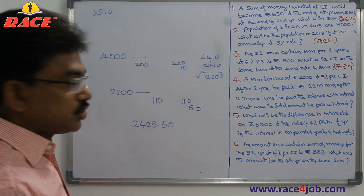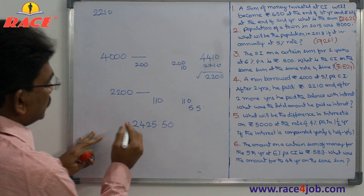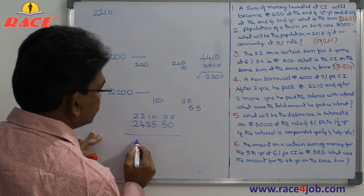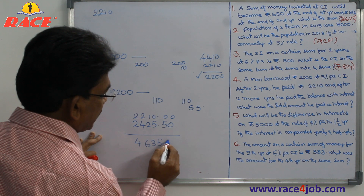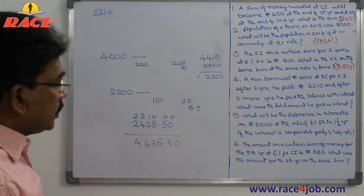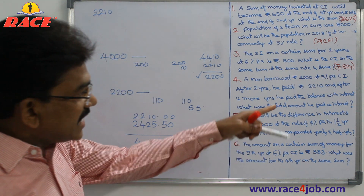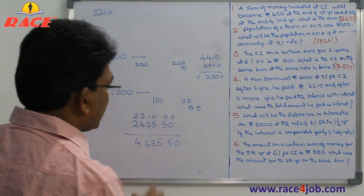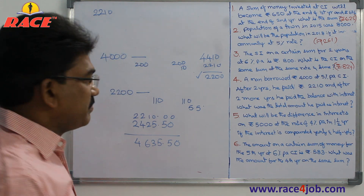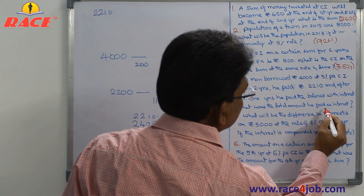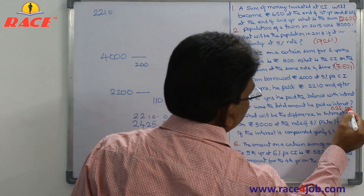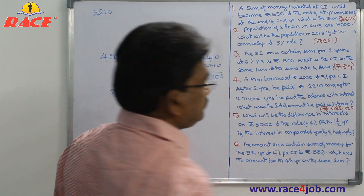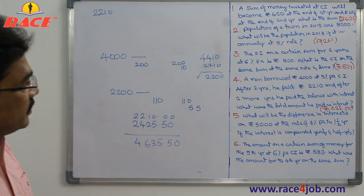2,425.5 is the amount he has to clear in the second part. Already he cleared 2,210 rupees. So total cleared is 2,210 plus 2,425.5 which is 4,635.5. Out of that, 4,000 was the original principal. So the total interest he paid is 635.5 rupees.